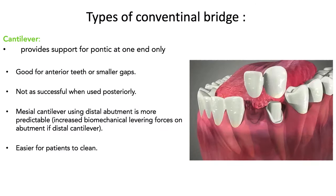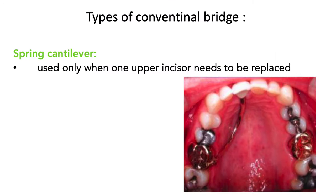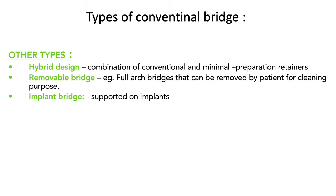A cantilever bridge uses only one end of the pontic and is generally good for anterior spaces. It should not be done posteriorly due to greater forces on the pontic. There should never be any lateral excursive forces on pontics — only a fairly light contact in ICP. The spring cantilever design is used when adjacent teeth are not suitable as abutments and a tooth at a different site must be used, though these are rarely done. Other designs include hybrid designs combining a conventional prep on one side and a resin-bonded retainer on the other. Removable bridges can be removed to clean underneath, and implant-supported bridges are also an option.